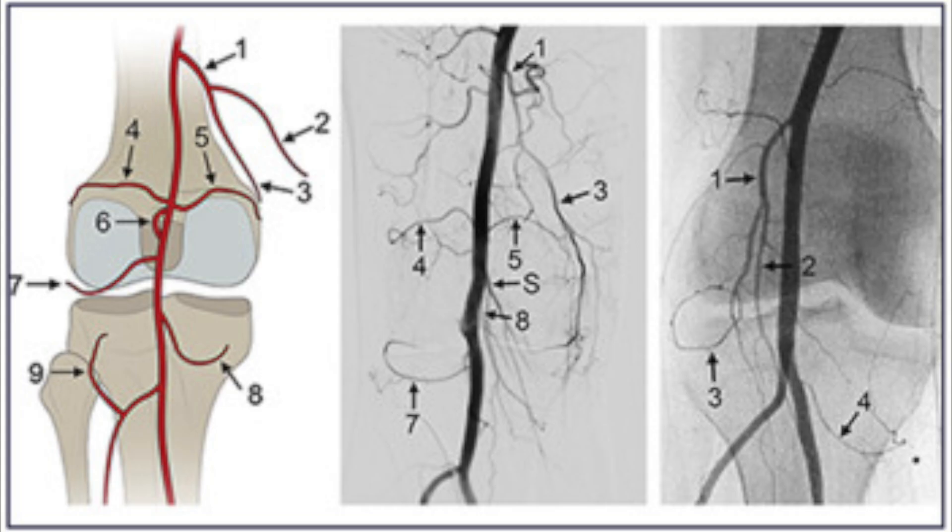Another option patients have been asking about is geniculate artery embolization. The geniculates include both nerves and arteries around the knee joint, and those arteries supply blood to structures around the knee. Some studies have found that embolizing the arteries around the knee can help reduce pain. This is used in patients with pain from arthritis or pain after knee replacement that has been refractory to other treatments. So there are three options: a geniculate nerve block, which is temporary; a geniculate nerve ablation, which is more long-term; or a geniculate artery embolization procedure.